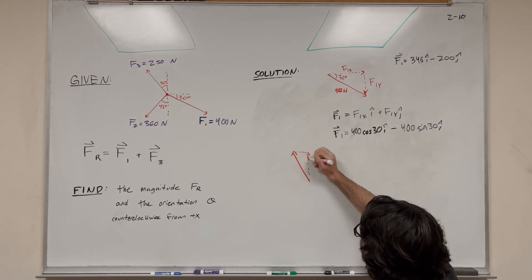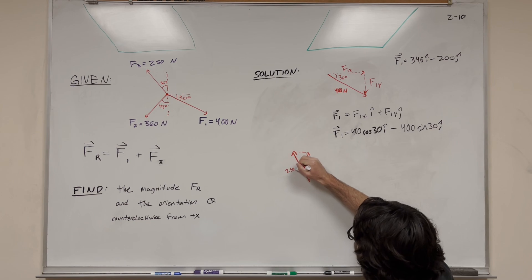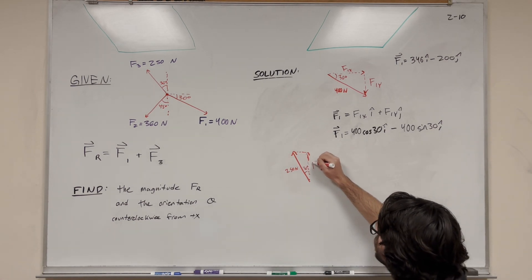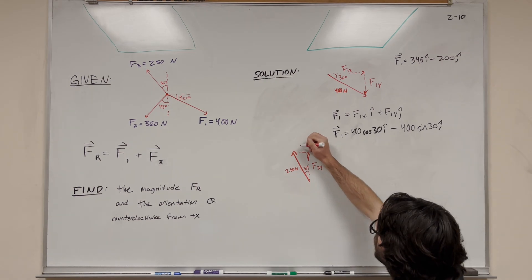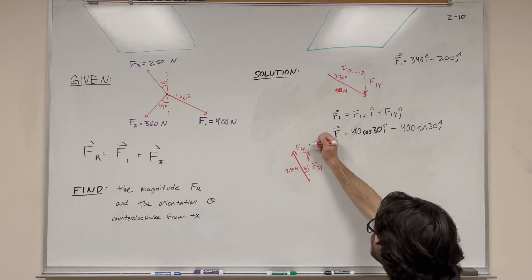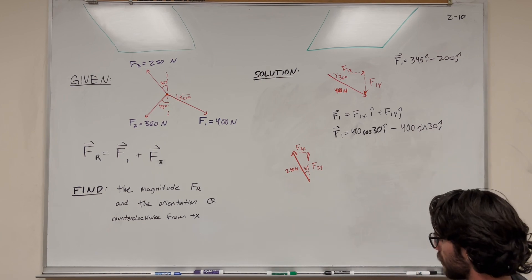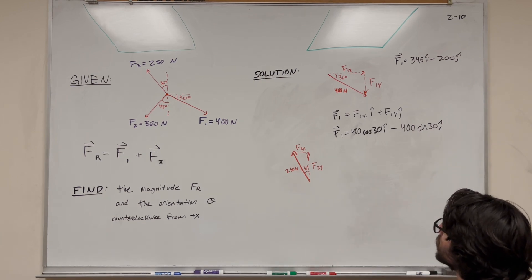We can write it like this. Its hypotenuse is 250 newtons with a 30 degree angle here. This is F3y and this is F3x. We need to find these components. Let's do it.